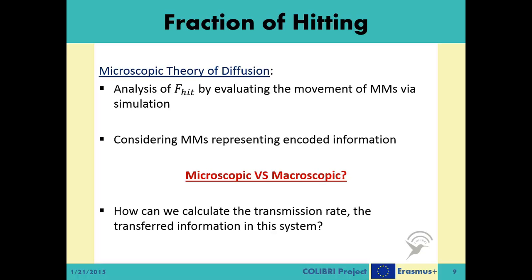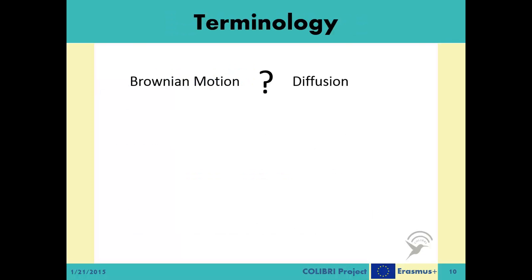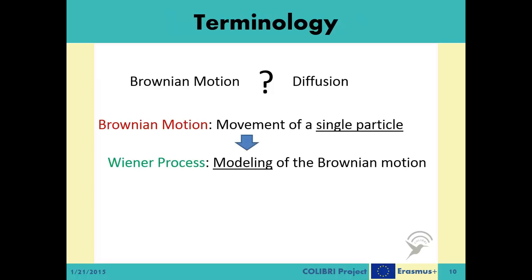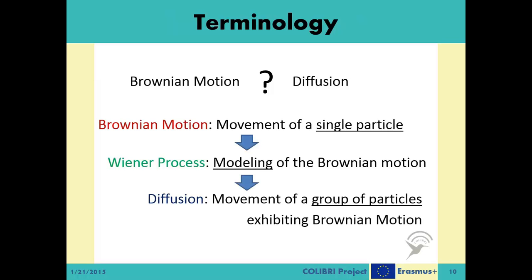After obtaining these f-hit values, the next question becomes: what is the transmission rate in the system and how can we calculate it? In the next video, we will be covering this next step. It is often confusing between the terms Brownian motion and diffusion in this context, so let us reiterate their definitions. Movement of a single particle is called Brownian motion, modeled by the Wiener process, also known as standard Brownian motion. A group of particles each exhibiting Brownian motion constitutes a diffusion process.